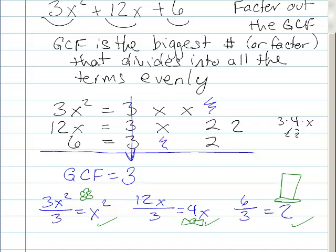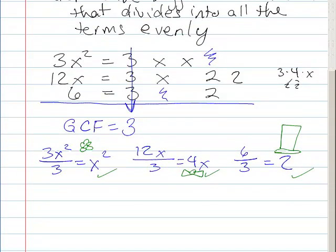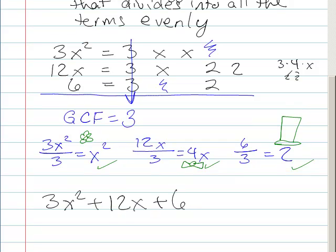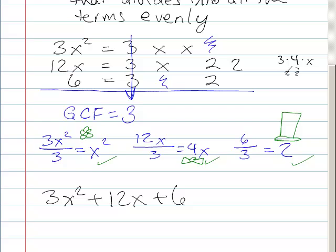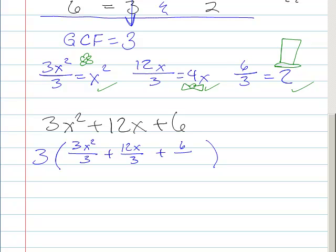So that means we can factor this expression. So our original expression again was 3x squared plus 12x plus 6. And we said we're going to factor out a 3. And so one way to do it is to say, well I'm going to go ahead and I'm going to pull a 3 out of each of those terms.